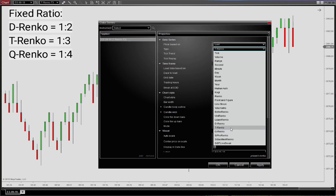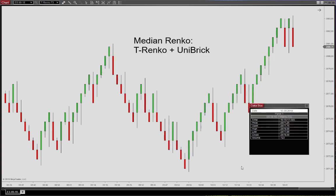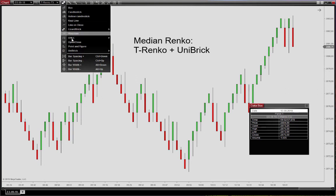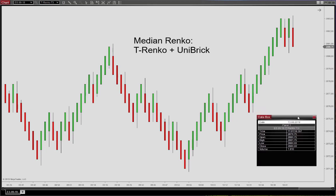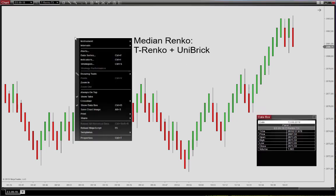If you choose the T-Renko, you will have the possibility with the Uni Brick to create a median Renko. Basically that means you have the open here in the middle of the previous candle, so that would be a median Renko.